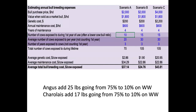Weaning at six months of age is not too early. Typically the industry weans at six to eight months in commercial operations. We can actually wean as early as 60 days of age in a drought situation, but that requires different management.